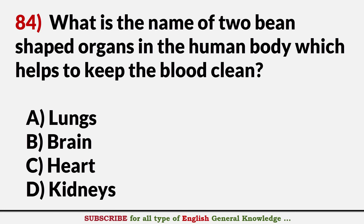What is the name of the two bean-shaped organs in the human body which help to keep the blood clean? Answer D. Kidneys.